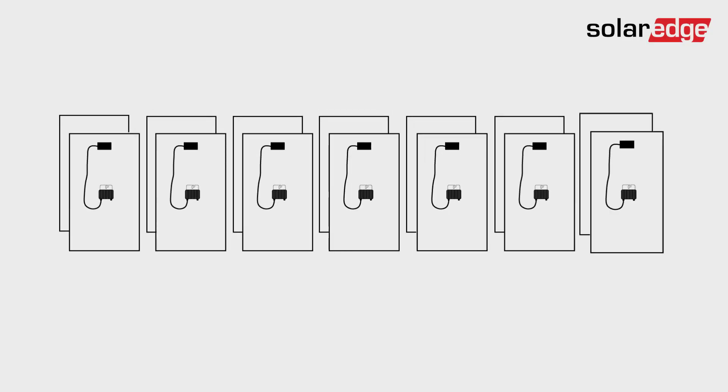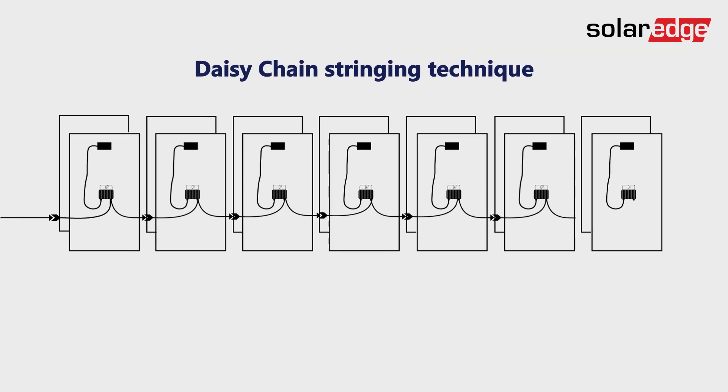Wiring commercial PV module arrays is often performed using power optimizer daisy chain connections and a long home run cable, from the first power optimizer to the junction box.